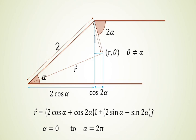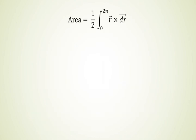Now only the calculation portion is left. We apply this formula for area: Area = (1/2)∫₀²π r⃗ × dr⃗. Here we have r⃗, and with this help we can find dr⃗.